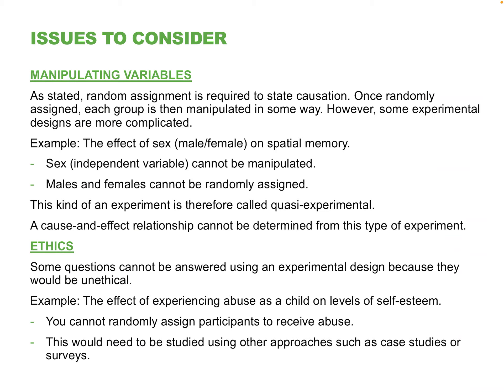Sometimes a researcher wants to do a comparison but can't do it in a traditional experimental way. For example, if you want to compare men versus women in a study, you can't flip a coin and say 'Okay, John Doe, you're female because you got tails.' You cannot randomly assign sex. So the independent variable here cannot be manipulated. You cannot manipulate age either, though people study those things all the time. The only way is to use a quasi-experiment — where you don't have random assignment — or a correlational study.